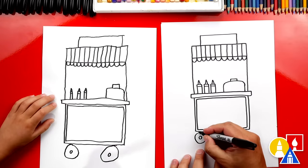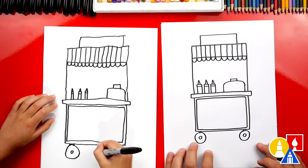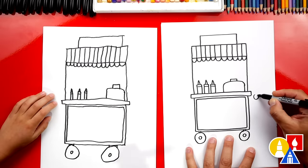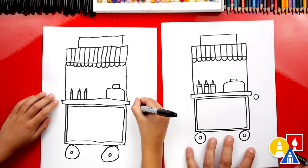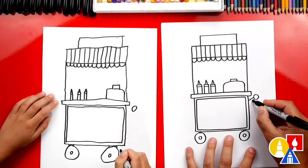And then we could also connect the wheels to our cart. We'll draw two little lines connecting. Then we also need to draw the handle. Let's draw another circle right here for the handle and then connect it into our cart. We'll draw two diagonal lines.